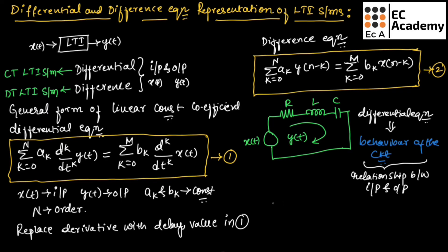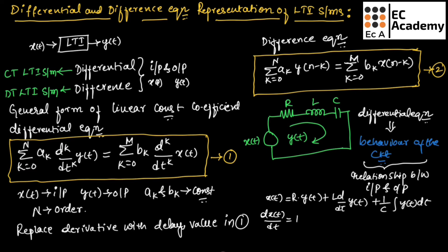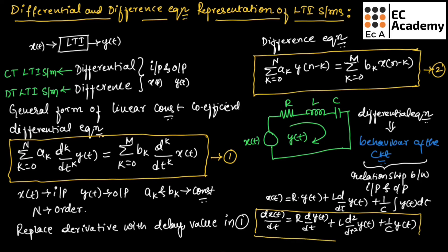Now let us write the differential equation. We can write: x(t) equals R·y(t) plus L·d/dt·y(t) plus (1/C)·integral of y(t) dt. If we differentiate this equation, we get: dx(t)/dt equals R·dy(t)/dt plus L·d²y(t)/dt² plus (1/C)·y(t). This is the differential equation of the electrical circuit.